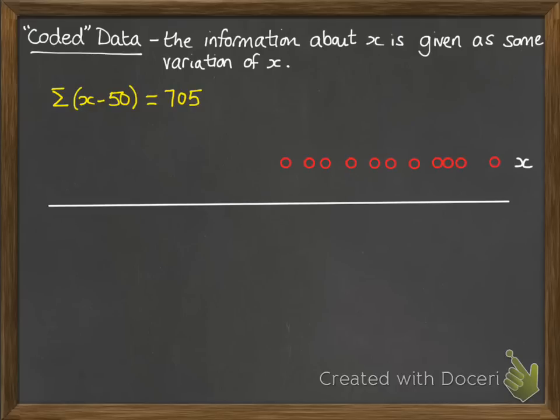Now if we think about what this means, if we imagine x as being these red dots here on our number line, they're all of our original values of x. But instead of telling us about those, they're going to tell us about the x minus 50s. So all of those pieces of data have been shifted down by 50.